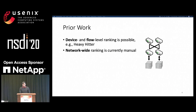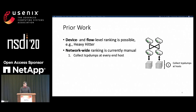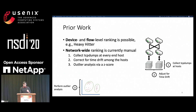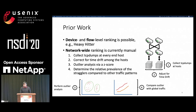For example, to determine the presence of a straggler, operators would need to first collect TCP dumps at every end host to get the start and stop time, then adjust for time drifts to get more precise flow times, then perform something like outlier analysis—such as z-score—to see if there's a straggler, and finally somehow quantify the prevalence of stragglers in the overall network. A different target pattern would require a completely different analysis.